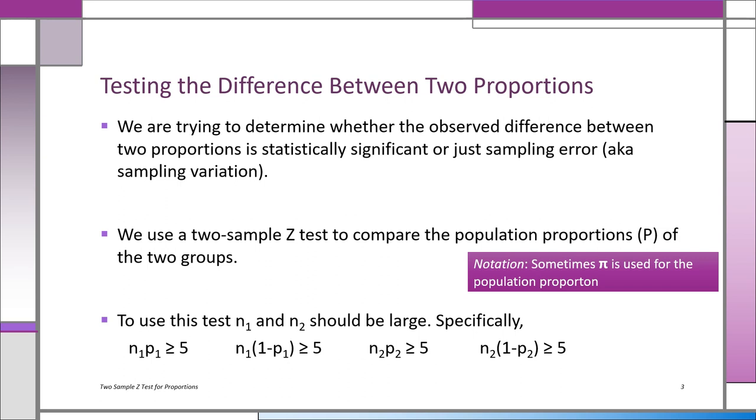n1 times p1 should be greater than five. Just look at it—you'll see that you need a relatively large sample to use the z test for this purpose.